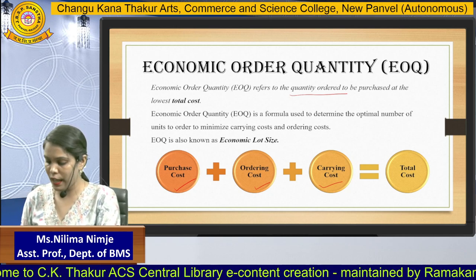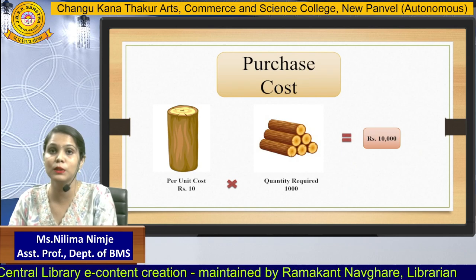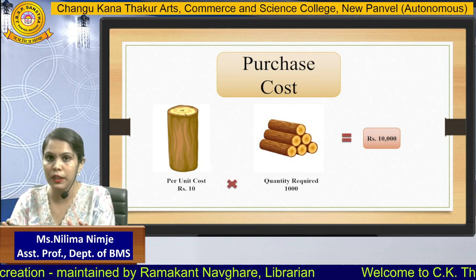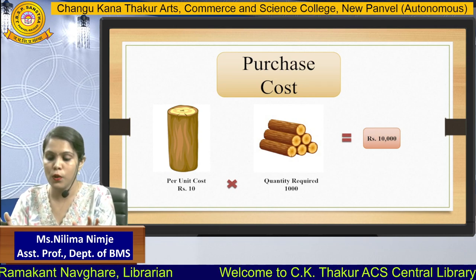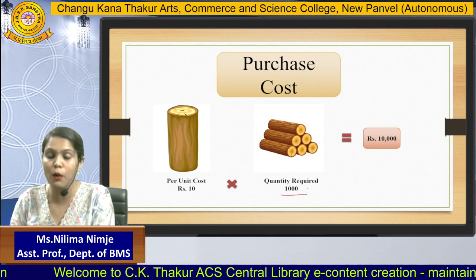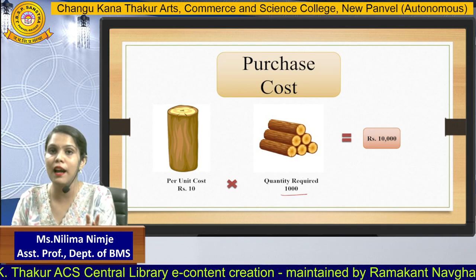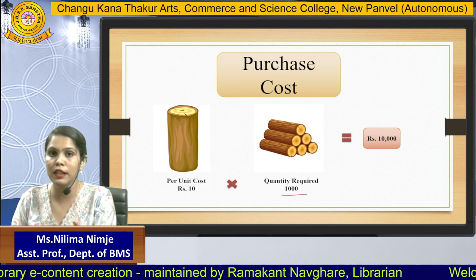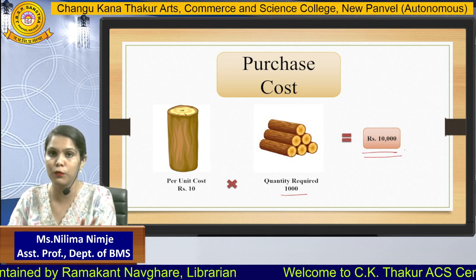Now let us see one by one what purchase cost, ordering cost, and carrying cost mean. Purchase cost is something which is very fixed — it does not change at all. For example, I have a company and I need to manufacture a chair, and for that I require wood. In a year, I am requiring 1,000 woods — this is called annual demand or annual consumption. The per unit value of that wood is 10 rupees, so 10 into 1,000 gives me 10,000. So my purchase cost is fixed for the raw material.